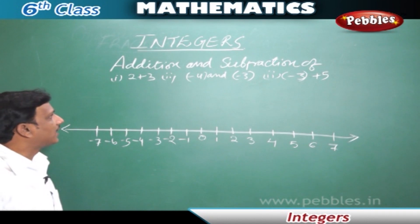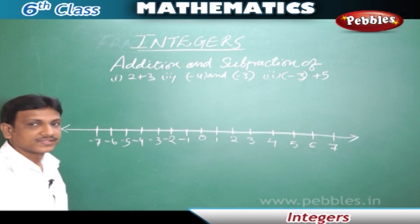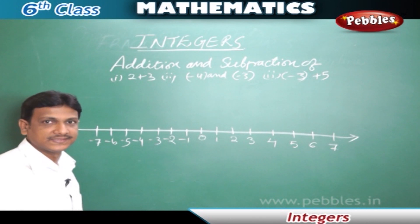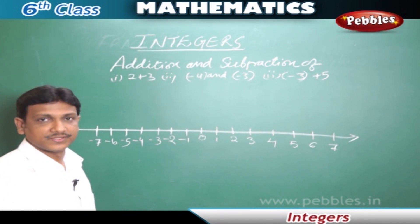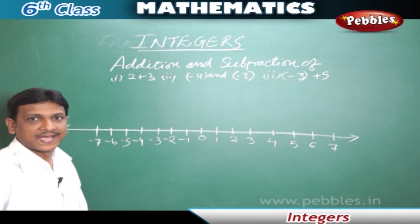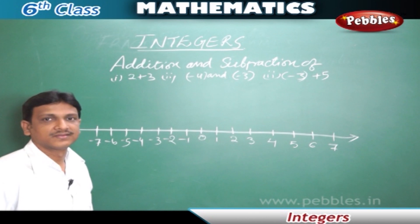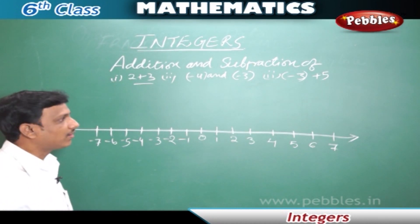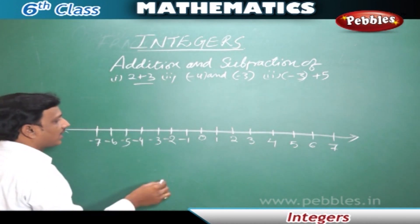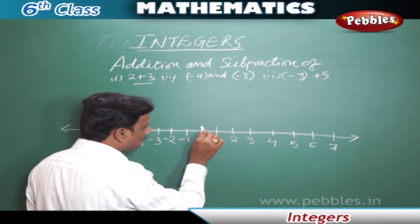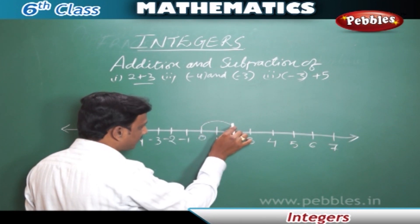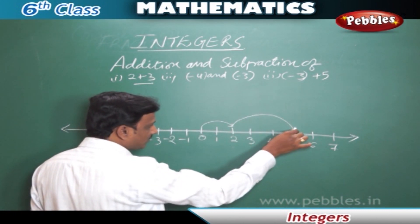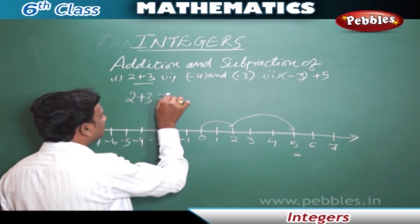Now let us see how to add and subtract on a number line. First, we will see addition on a number line. We are going to add some integers. In the first example, 2 plus 3 — both are positive numbers. On the number line from 0, we move two positions to the right side. This is addition, so we move right. From 2, we move three more positions. We have reached 5. So 2 plus 3 equals 5.